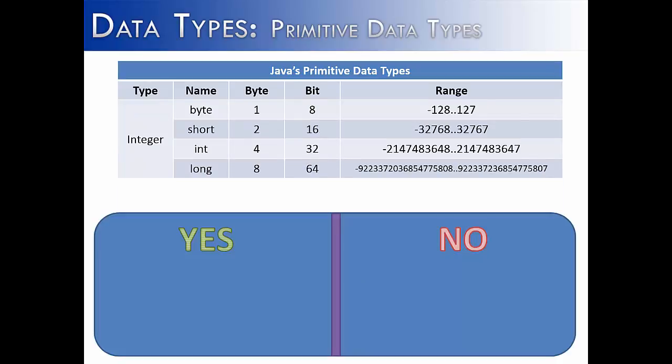Now Java has four different types of integer values: byte, short, int, and long. And you'll notice that they're differentiated by their range. Byte can only hold numbers from negative 128 to positive 127, whereas long can hold a significant amount more.